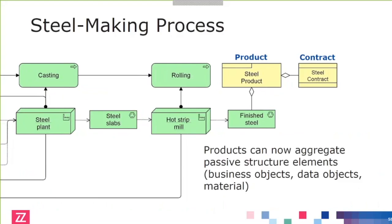Of course, a product is always associated with some kind of contract. There's some kind of agreement between the buyer and the seller involved. It's not just the finished steel that makes it into a product — it's because you sell it as a product. You might also observe, if you're a hardcore Archimate user, that we've changed the notation for contract. There's a line at the bottom that makes the difference between a contract and a business object. There are a few of those changes in the language to help you distinguish between concepts, to make sure that you don't confuse contracts with business objects.